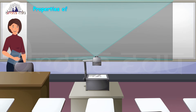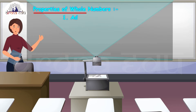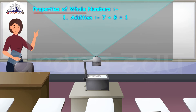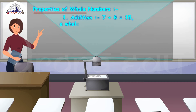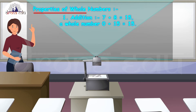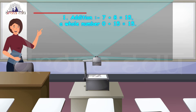Students, let us consider adding two numbers such as 7 plus 8. So 7 plus 8 is nothing but 15. Similarly, if I add 0 plus 15, I am getting 15 again. So when I am adding whole numbers, I am getting the answer as a whole number.